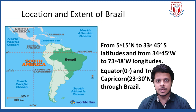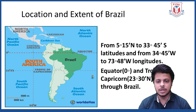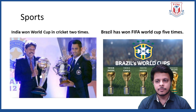Let's understand the location and extent of Brazil. Brazil is located from 5 degrees 15 minutes north to 33 degrees 45 minutes south latitude, and from 34 degrees 45 minutes west to 73 degrees 48 minutes west longitude. The Equator and the Tropic of Capricorn are the important latitudes which pass through Brazil. India has won the Cricket World Cup two times, and Brazil has won the FIFA World Cup five times.